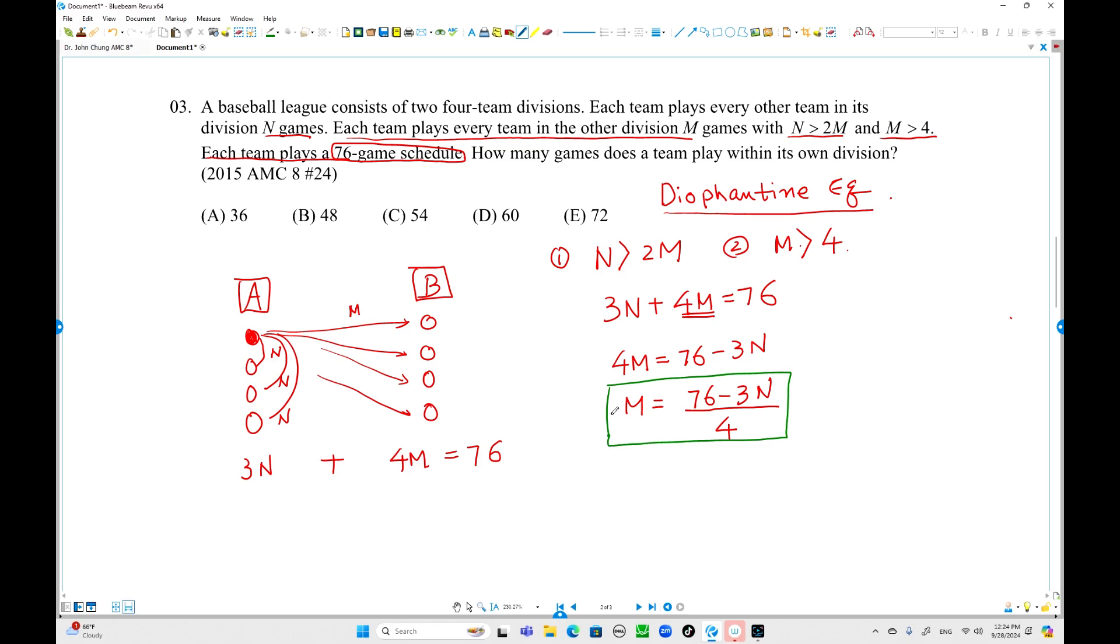You can express M in terms of N, but this is better because the number of 3N games is given in the options already. There are only 5 numbers. You can check out these options very quickly. That is the best way. This we call back-solving.